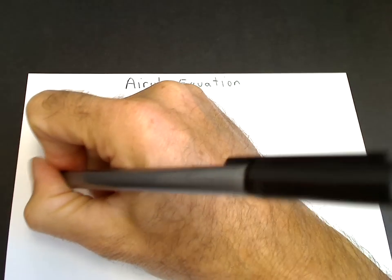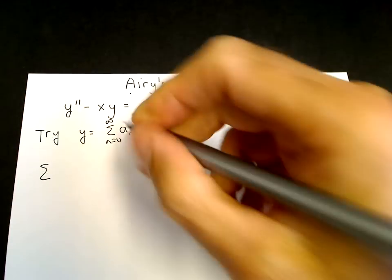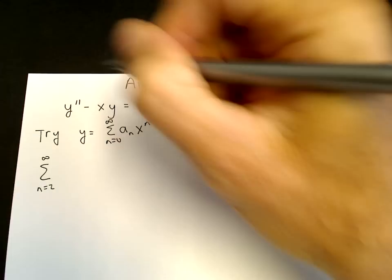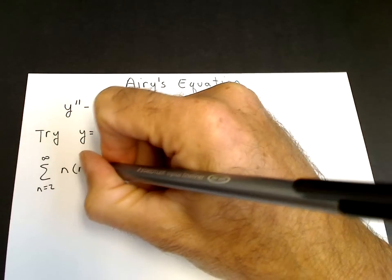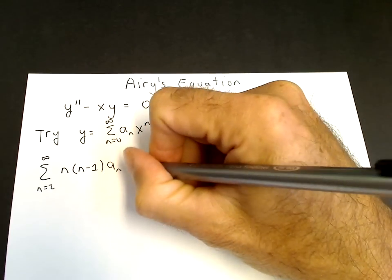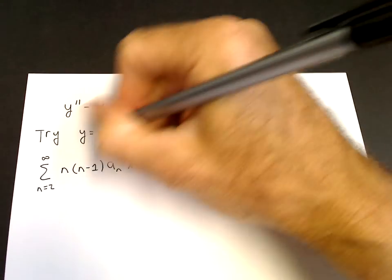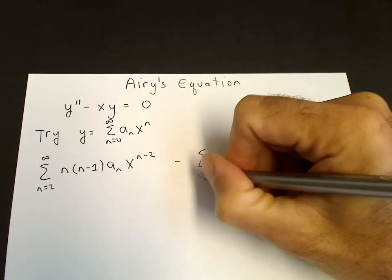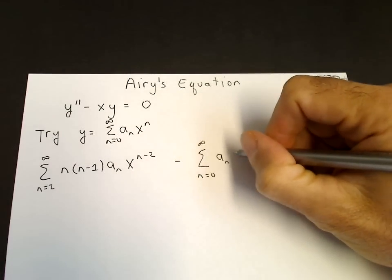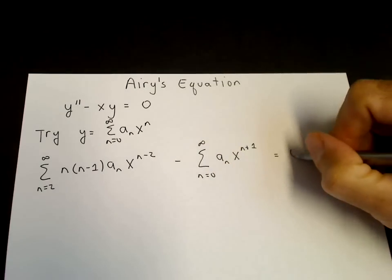After substituting, the first two terms vanish from taking the second derivative, so we get the sum from n equals two to infinity of n times (n minus one) times a sub n times x to the n minus two, minus (multiplying y by x) the sum from n equals zero to infinity of a sub n times x to the n plus one.